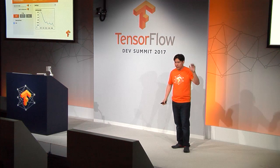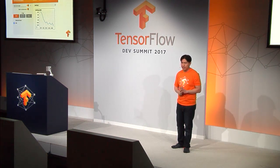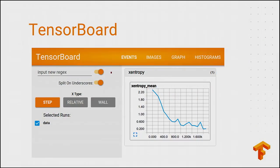TensorBoard was covered in another talk. You might wonder how to use it with distributed training. With distributed training, you have output — summaries and events — that go to a directory you specified on distributed storage. All you need to do is run the TensorBoard command and point it to that distributed storage directory. It will start an HTTP server locally where you can look at your losses, go through the embedding visualizer, and all that stuff works.